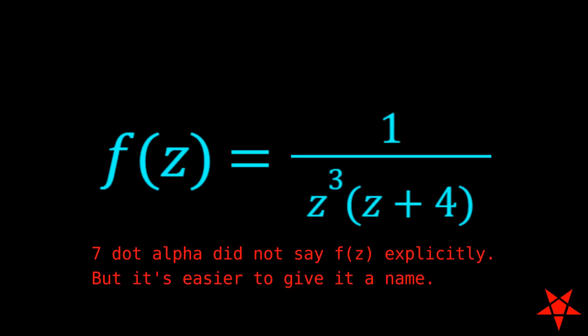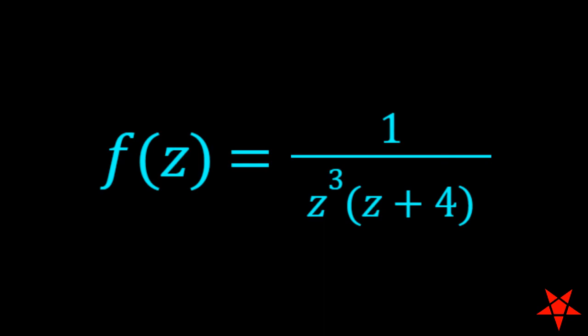Upon doing so, we will then be required to determine the residues at those same points. The denominator is already pretty well factored for us, and it's easy to see that it goes to 0 at z equals 0 and z equals negative 4.